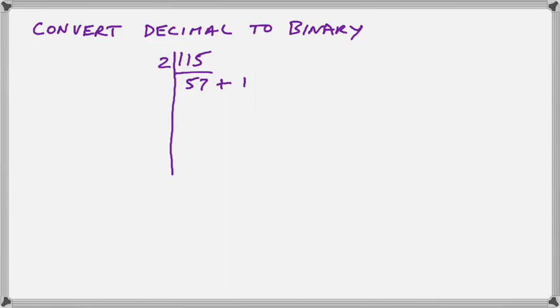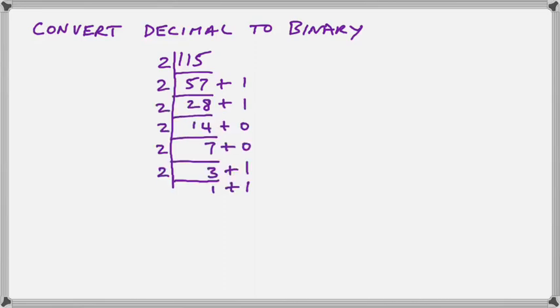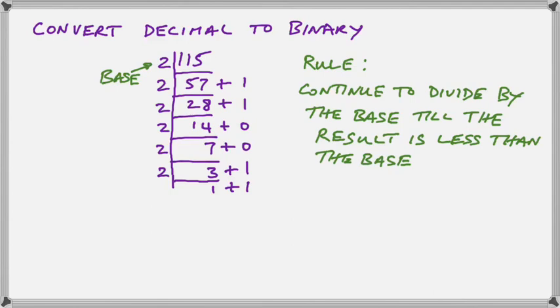The first thing we're going to convert is a decimal number 115 to binary. And we turn this into binary by dividing by 2. So we do successive divisions of 2, and we take the remainder until the result is less than 2. There's the rule you can follow. You can see it there in front of you. And then we come up from the bottom to the top, and we write down the binary equivalent of our decimal number.